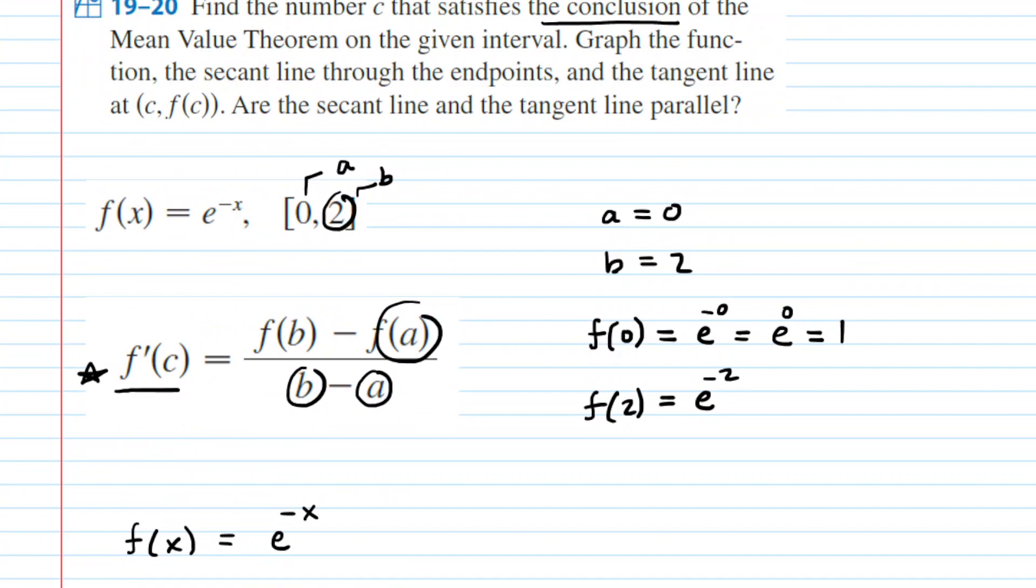And it said specifically to graph the function, the secant line through the endpoints, and then the tangent at c f of c. So to understand that, let's go and graph this function right here.